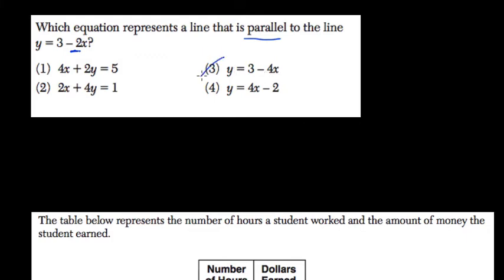So I'm going to eliminate choice 3 because the slope is negative 4. I'm going to eliminate choice 4 because the slope is 4. We're looking for a slope of negative 2. It must be one of these here. So let's just rewrite the way they're presented.